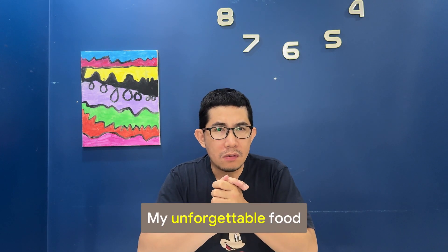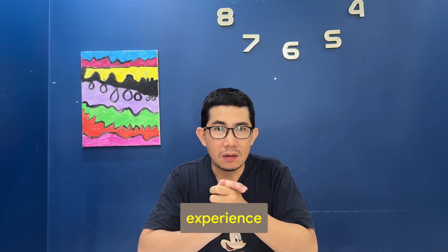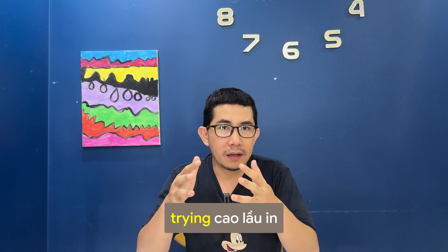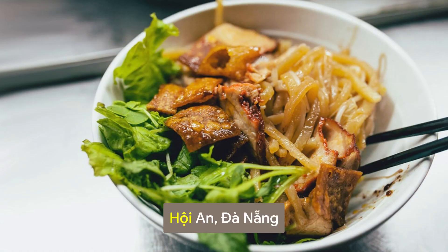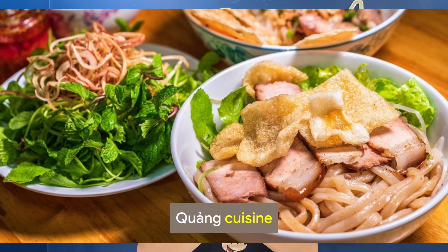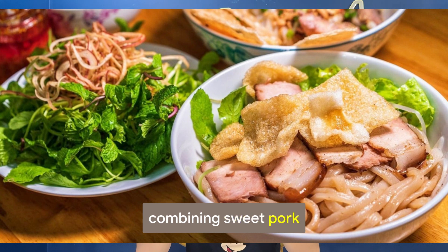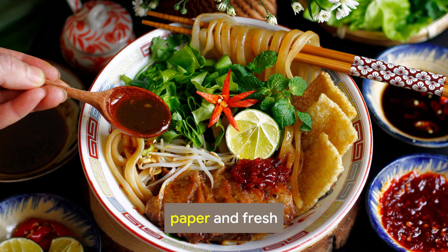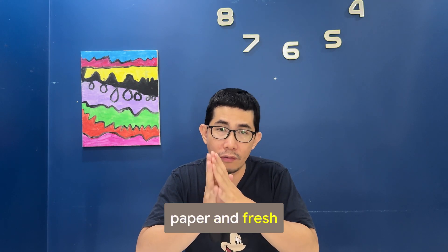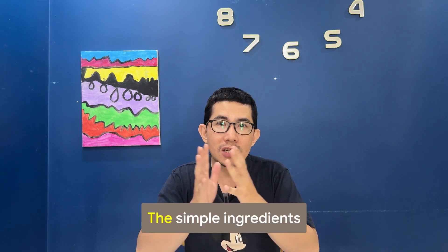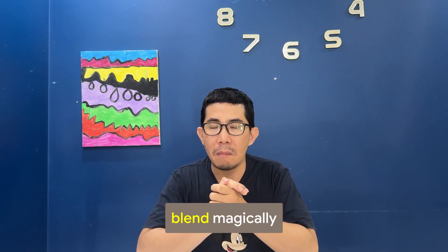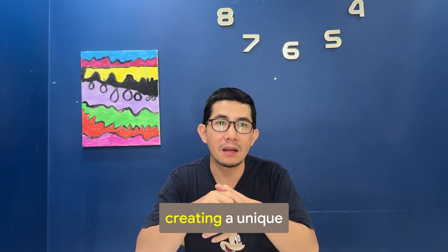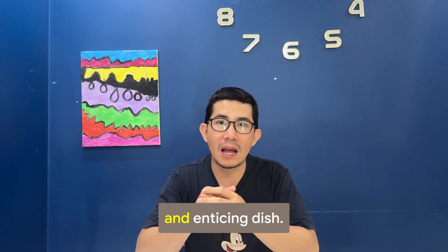My unforgettable food experience while traveling was trying cao lầu in Hội An, Đà Nẵng. This dish is the star of Quảng Cuisine, combining sweet pork broth, chewy cao lầu noodles, fragrant grilled rice paper, and fresh veggies. The simple ingredients blend magically, creating a unique and enticing dish.